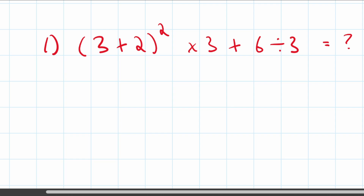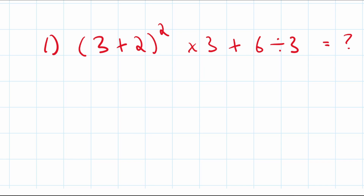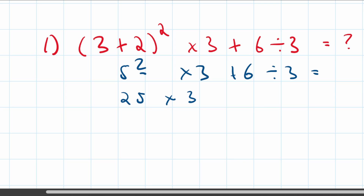Let's try a practice question: (3 plus 2) squared multiplied by 3 plus 6 divided by 3. First, do the brackets: 3 plus 2 equals 5. Now we have 5 squared multiplied by 3 plus 6 divided by 3. Next, apply the power: 5 squared is 25. So we now have 25 multiplied by 3 plus 6 divided by 3.